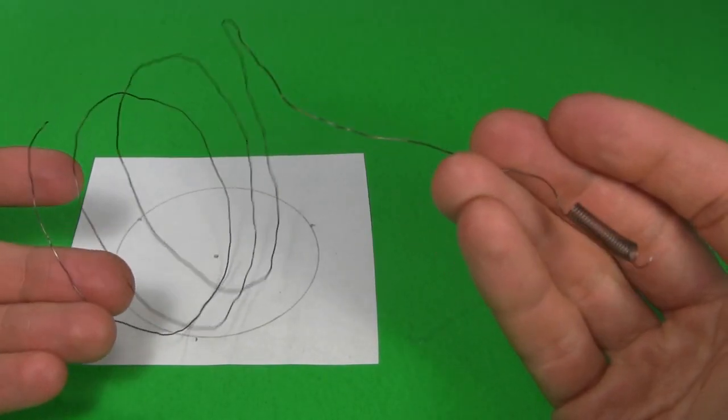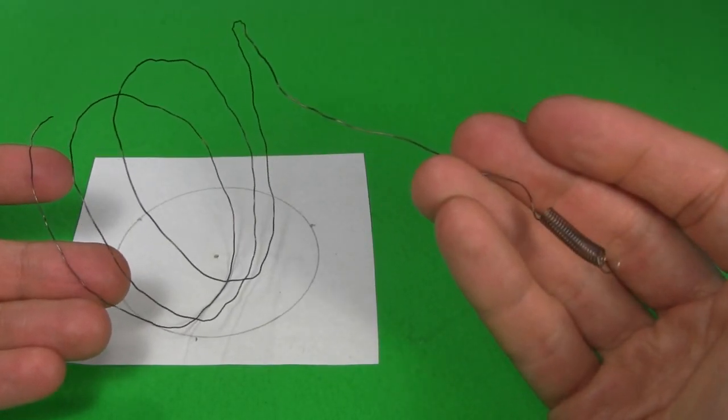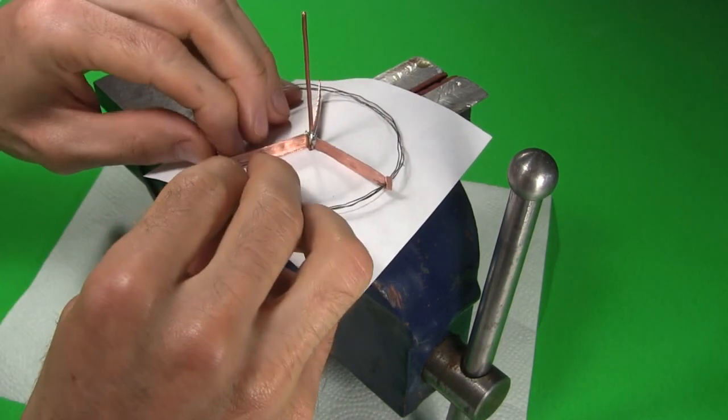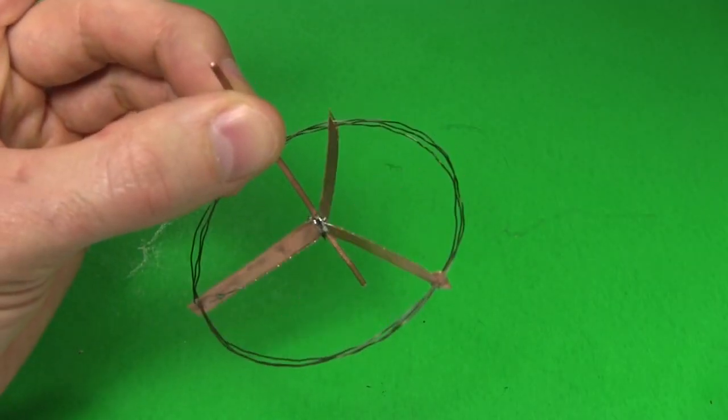I then stretch out enough nichrome wire from the hair dryer to make three circles. I wind the circles of wire through the notches. And here's the resulting rotor.